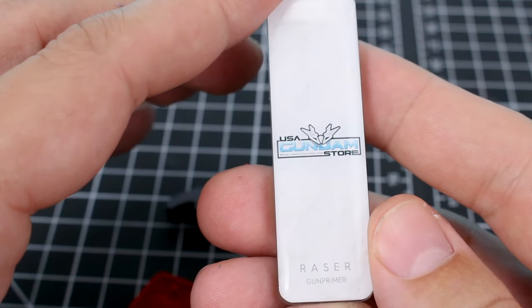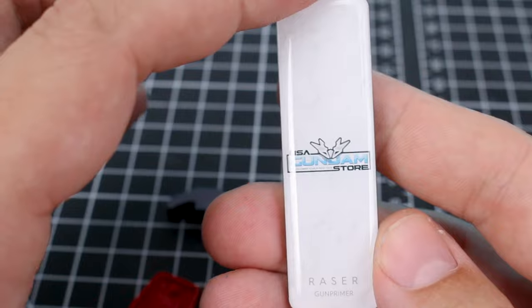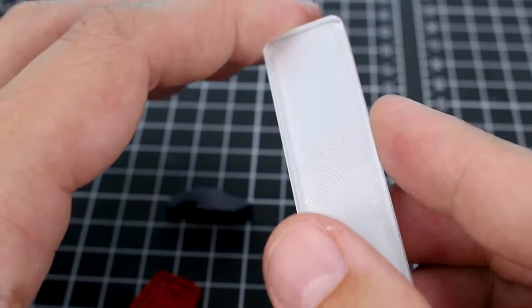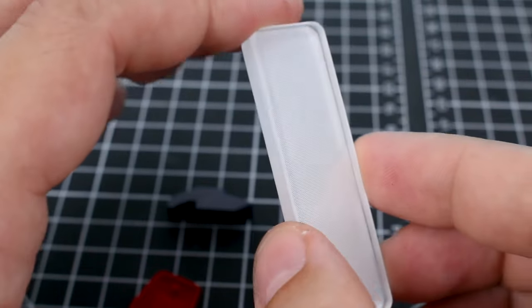For a glass file option, here from Gun Primer is the USA Gundam Store branded version of the razor. So this is going to be your coarse side that you're going to use for sanding.